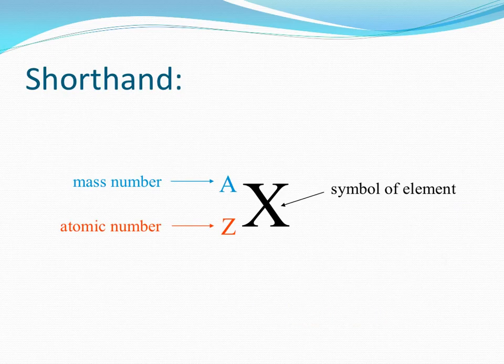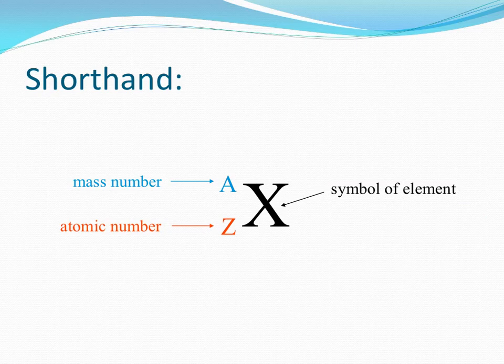We need to know a shorthand way of representing all atoms including their mass number and atomic number. The mass number is written as a superscript before the symbol of the element, and the atomic number is written as a subscript before the symbol of the element as well, as shown on this part of the video.